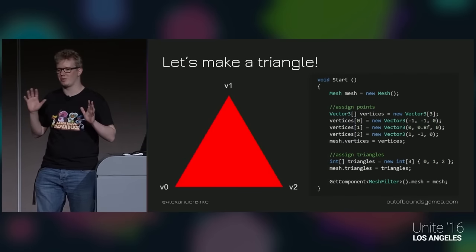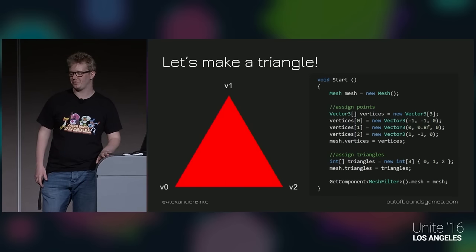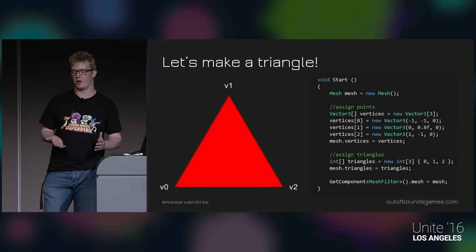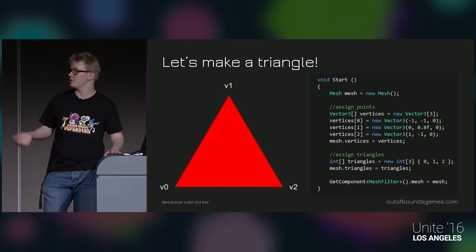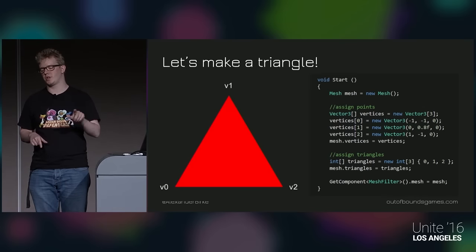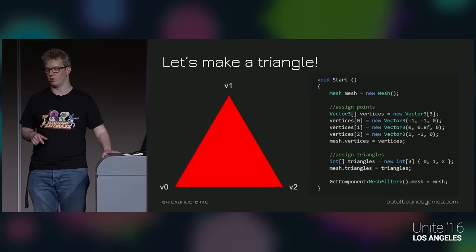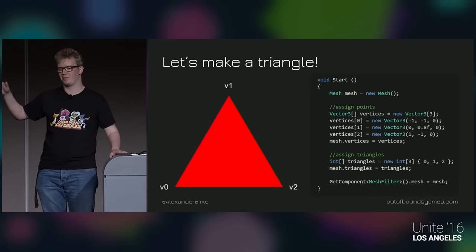So this is probably the simplest mesh you can make. The way you do it is first you create an object of the mesh class, then you give it a vertex array — it's just Vector3s — and after that you tell it where in the vertex array a given triangle is. For this example it's fairly basic, but it can get complicated really quickly.